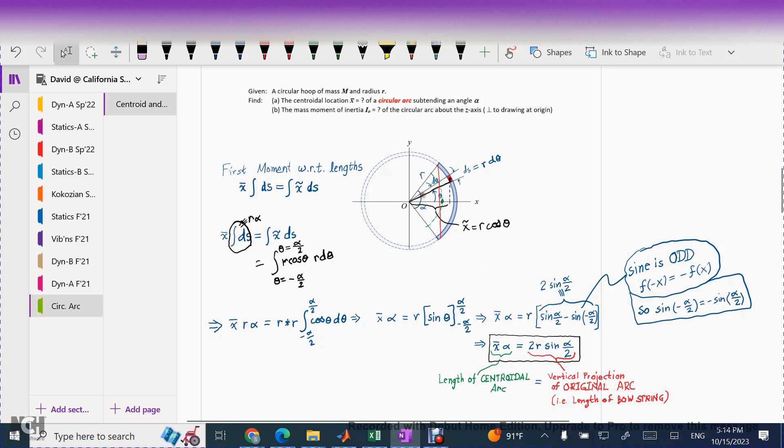Why is that? Remember that half of this angle is alpha over 2. r times sine of alpha over 2 would be half of that bow height, and we've got two of those. So it's going to be that full length of bow string is exactly equal to the length of this centroidal arc. That's an interesting result.